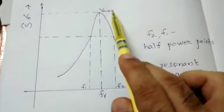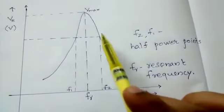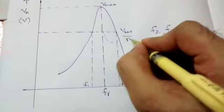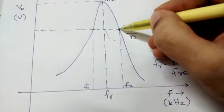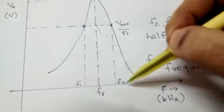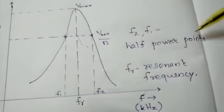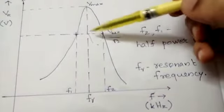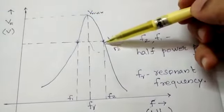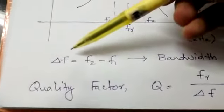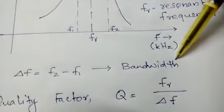In the graph, if the maximum value is Vmax, we can find Vmax divided by root 2. We find the particular points on the graph with those y-values and take their x-coordinates, called F1 and F2. F1 and F2 are called the half-power points of the circuit. Between F1 and F2, the voltage across the resistor is at least Vmax by root 2. The difference F2 minus F1 is called the bandwidth of the circuit.